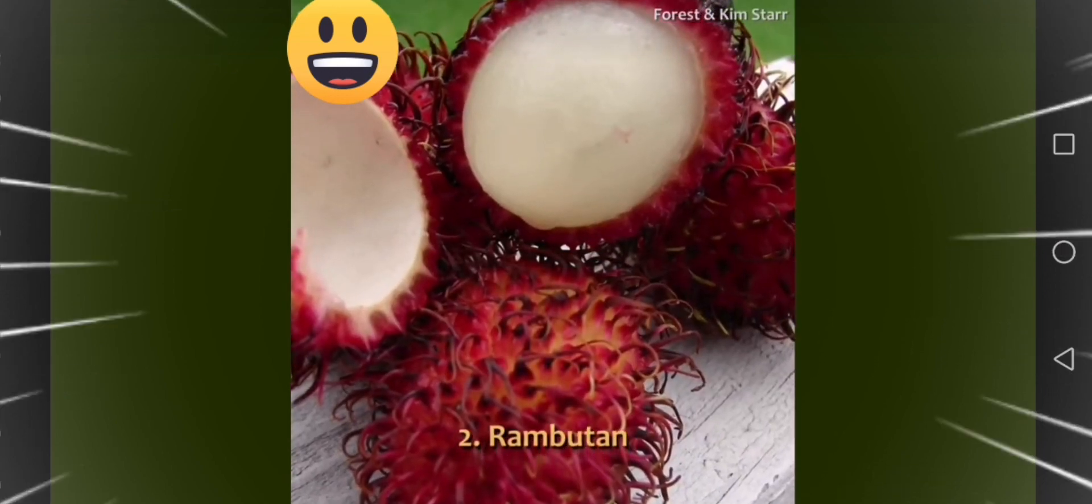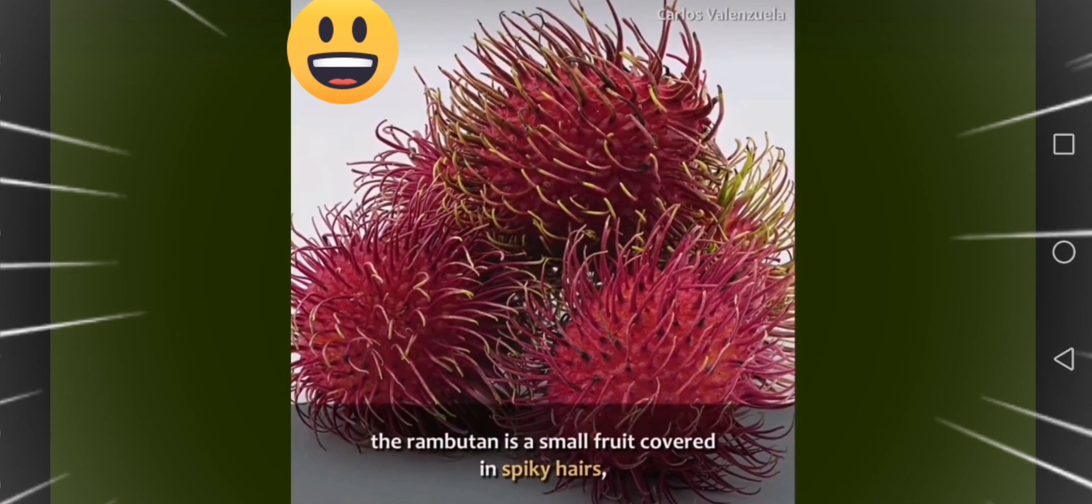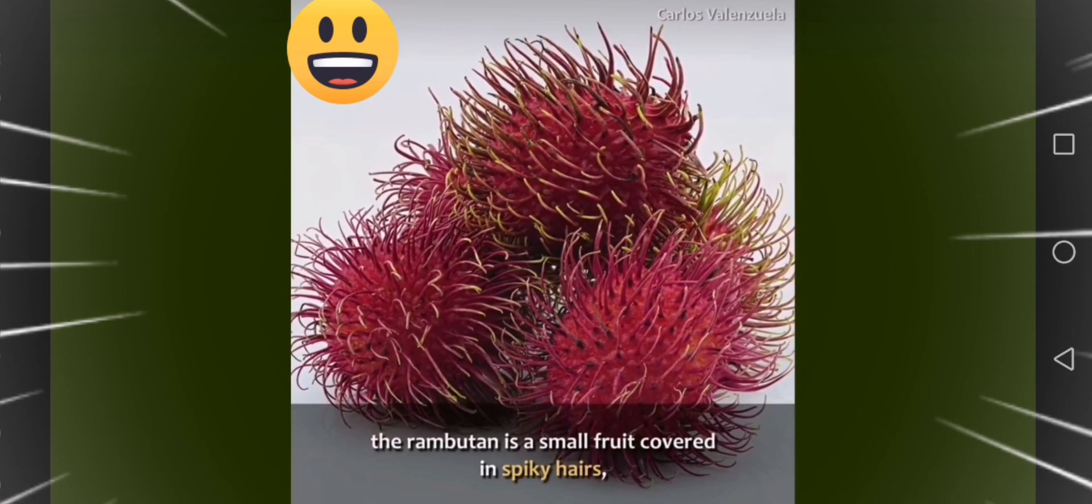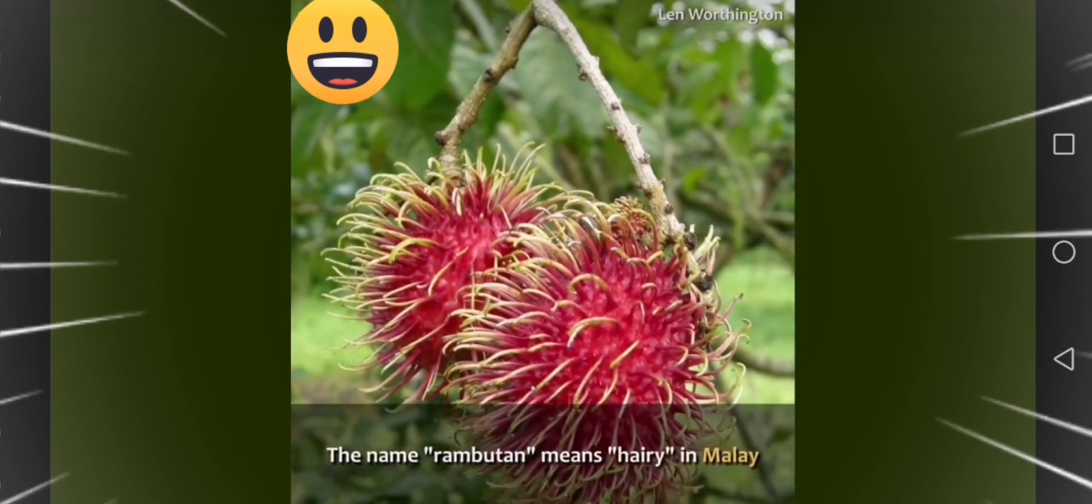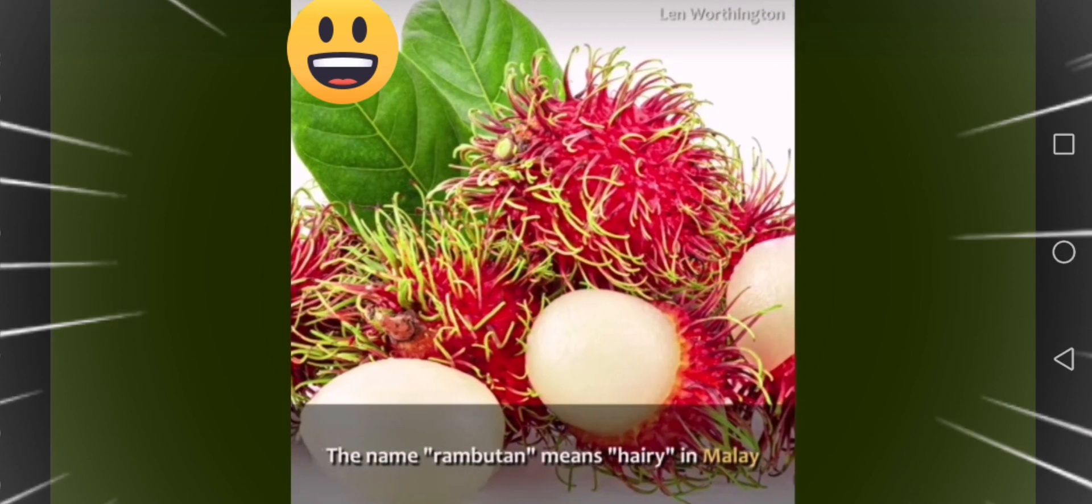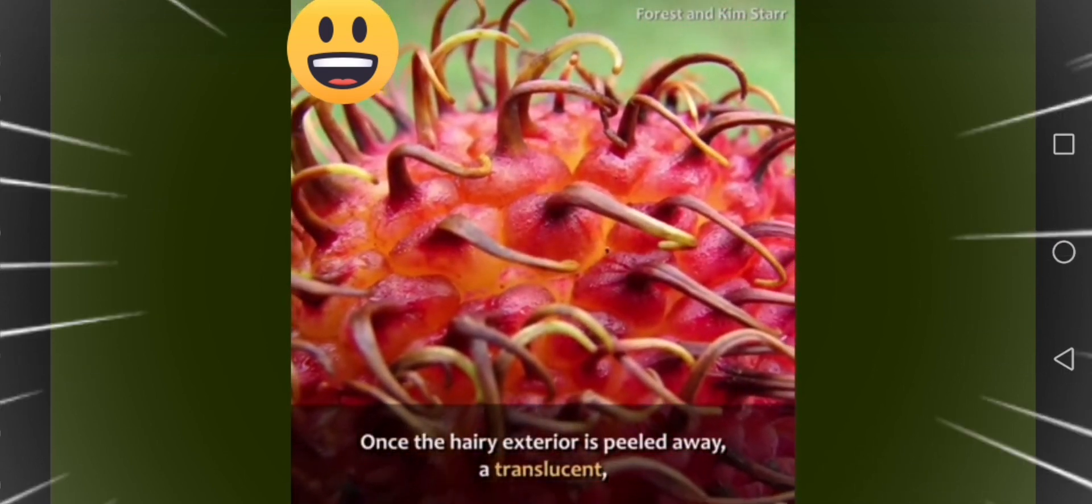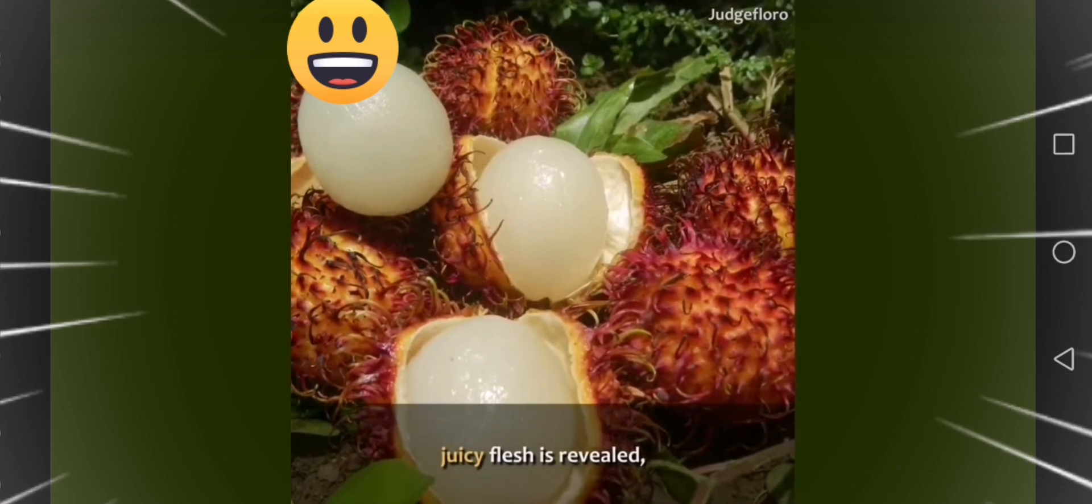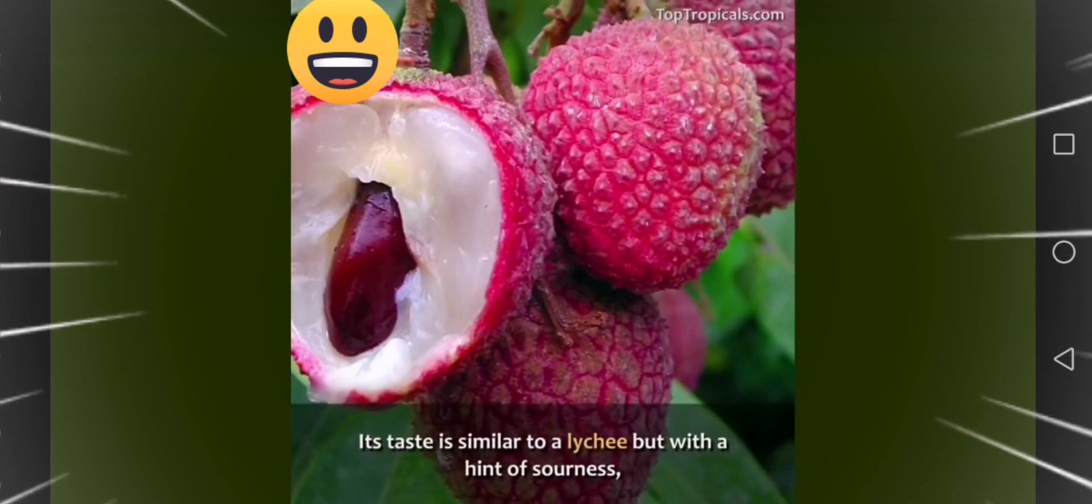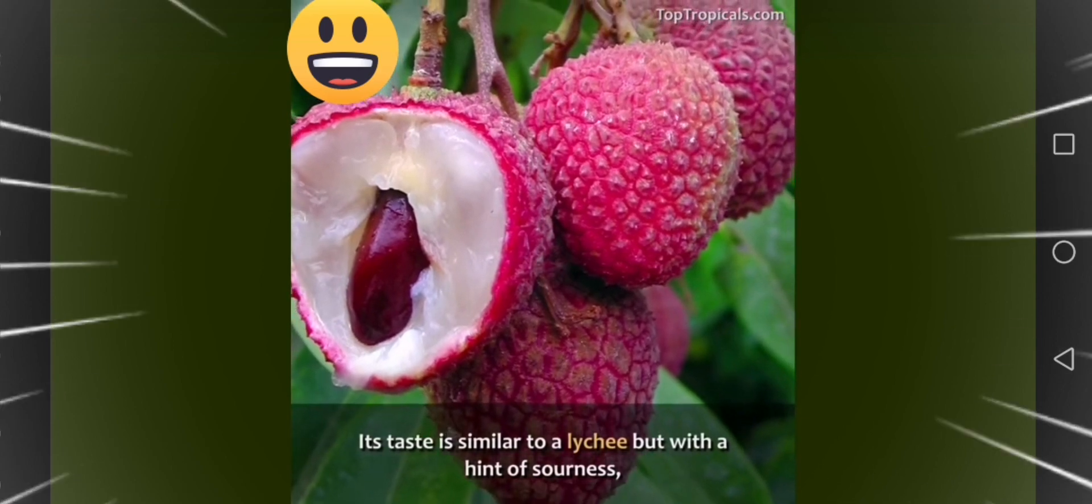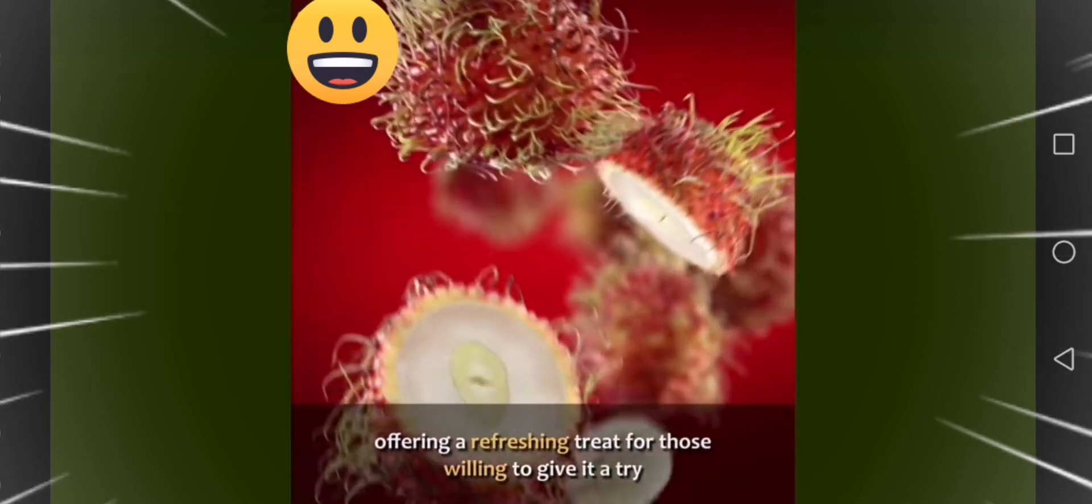Two, rambutan. Originating from Southeast Asia, the rambutan is a small fruit covered in spiky hairs, resembling a hairy lychee. The name rambutan means hairy in Malay. Once the hairy exterior is peeled away, a translucent, juicy flesh is revealed, which is mildly sweet and slightly acidic. Its taste is similar to a lychee, but with a hint of sourness, offering a refreshing treat for those willing to give it a try.